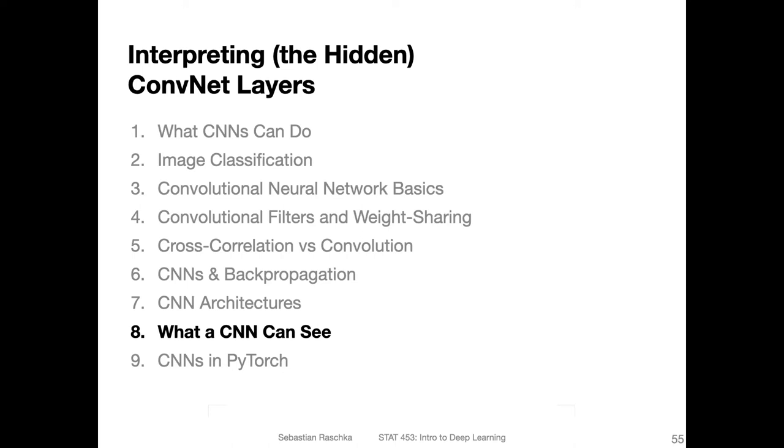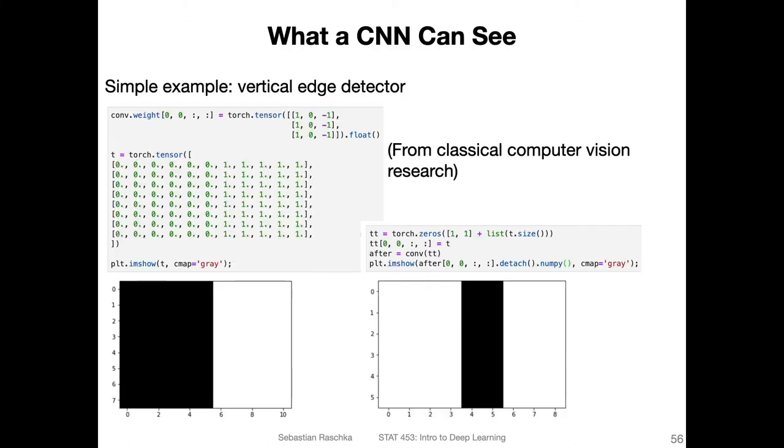Now that we talked about convolutional networks and the convolution operation, we might wonder what is actually going on in a convolutional network? What is the convolutional neural network actually learning? We can take a brief look at that from a traditional computer vision perspective.